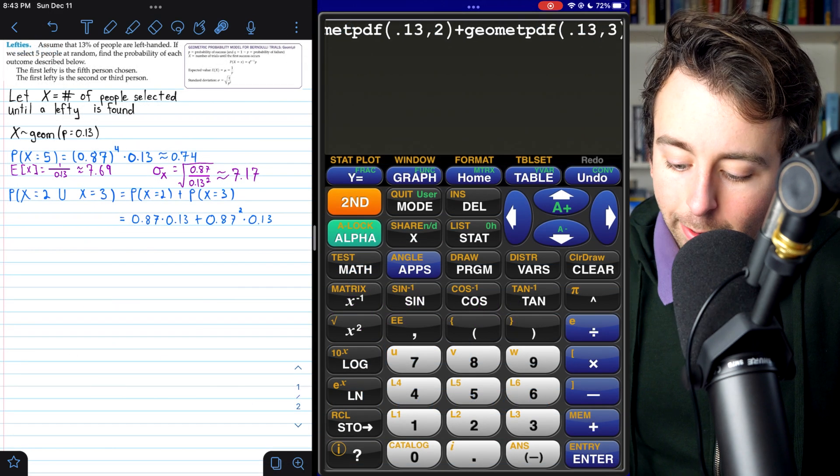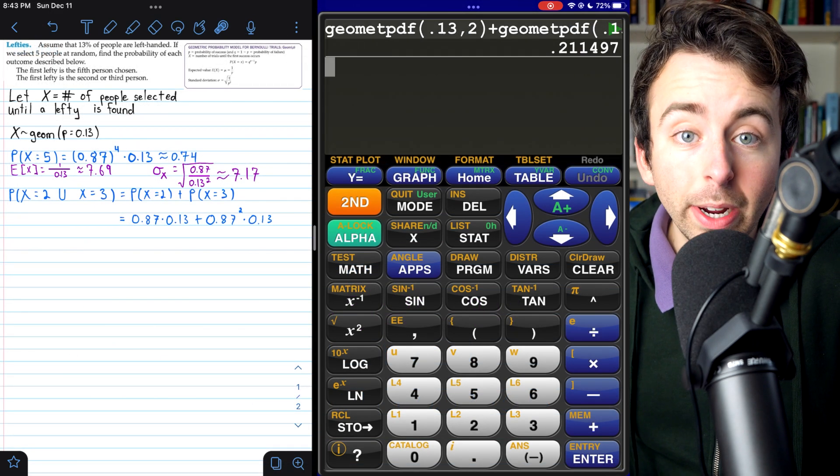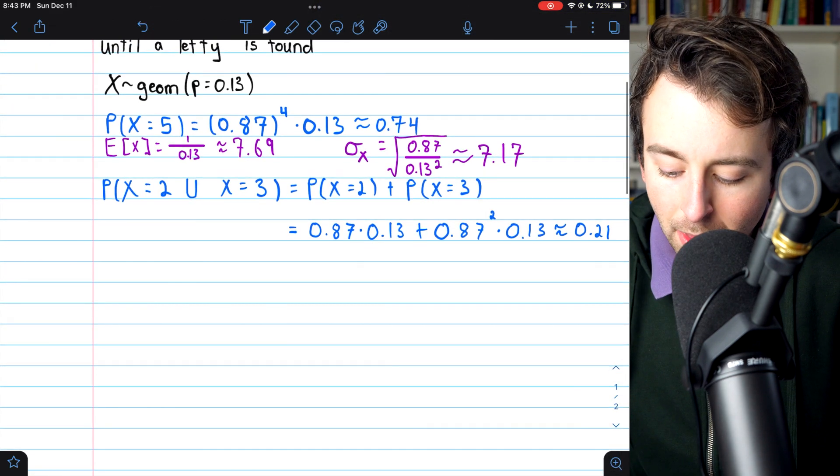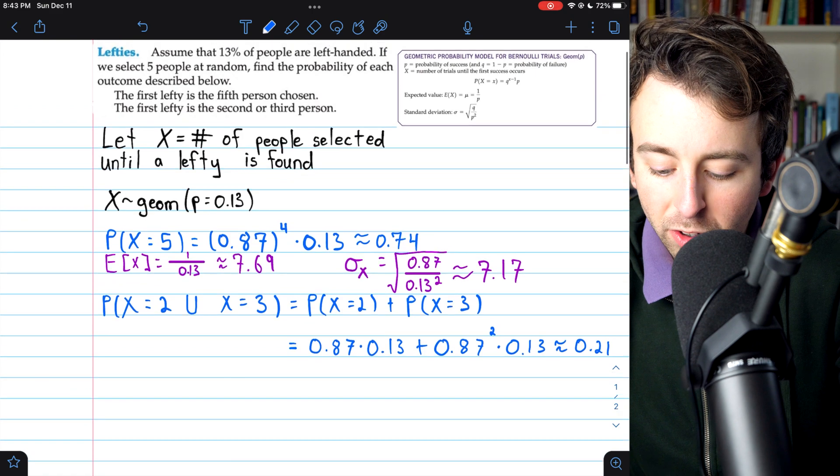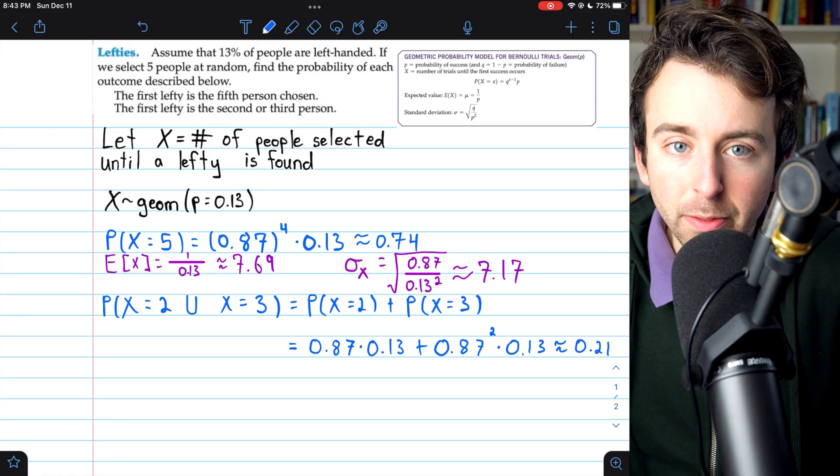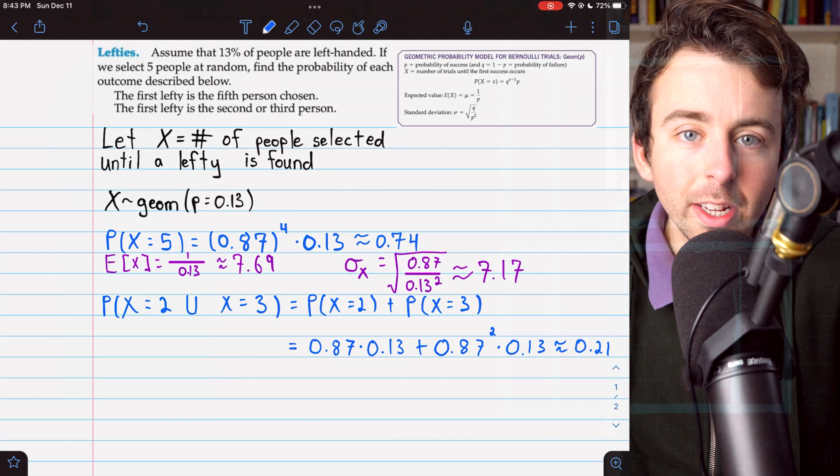And if we consult our calculator for these numbers, we find the probability is 0.21. So there we go. This probability is about 0.21, and that's how we answer some simple questions about geometric distributions and how we calculate their expected values and standard deviations. Hope it was helpful. Let me know in the comments if you have any questions.